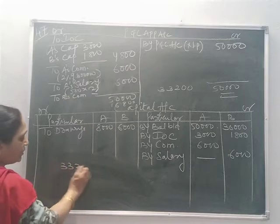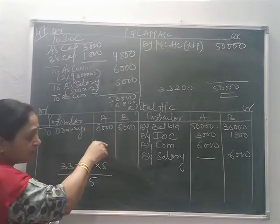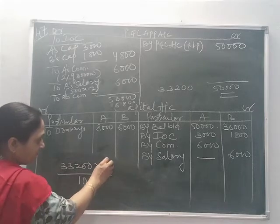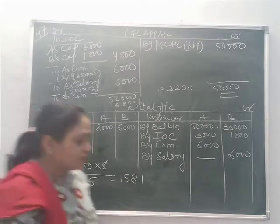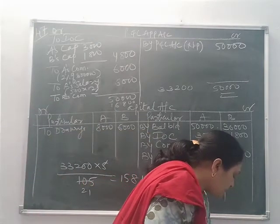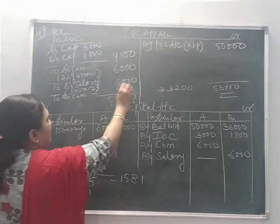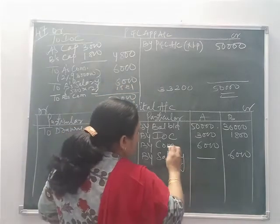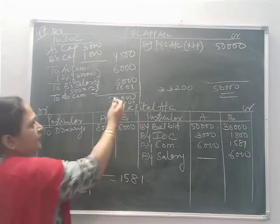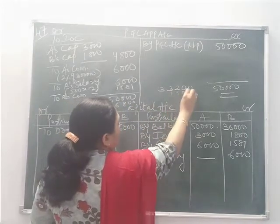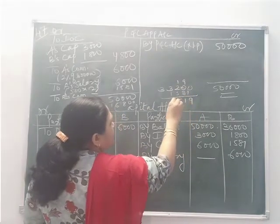The calculation of 33,200 into 5/105 gives approximately 1,581. So B's commission payable is taken as 1,581. This figure is now subtracted from the divisible profit of 33,200, giving the final divisible profit to be shared among the partners in 3:1.